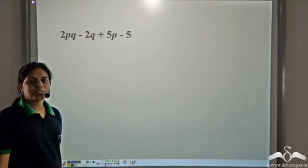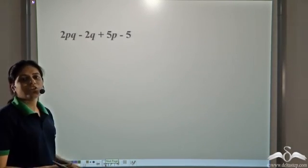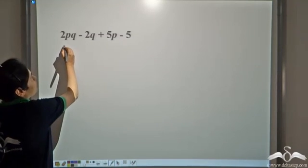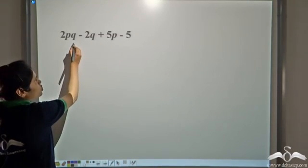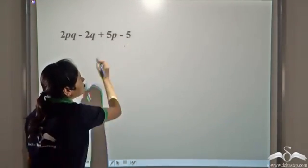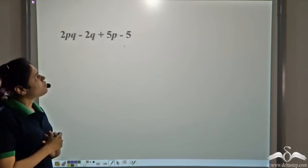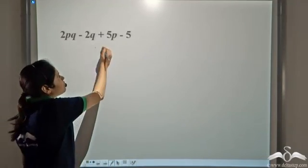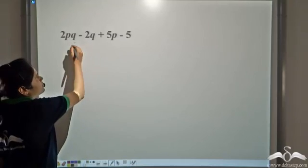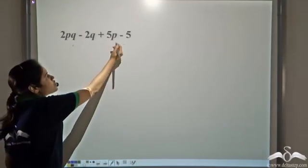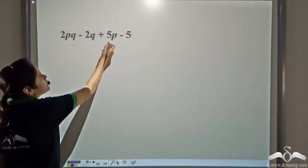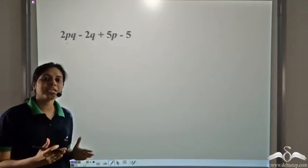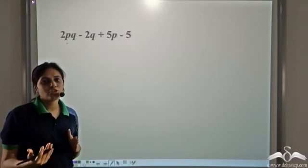Now how will you factorize an expression like this? Again we try to find the common factor between the different terms. This is 2·p·q, this is 2·q, this is 5·p and this is 5. We cannot find any single common factor between all four terms. The first two terms have 2q as common, the last two terms have 5 as common, and these two terms have p as common. But all four terms do not share a single common factor. So what do we do now?